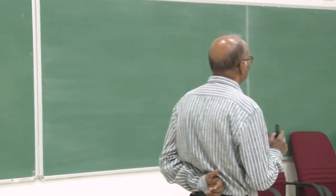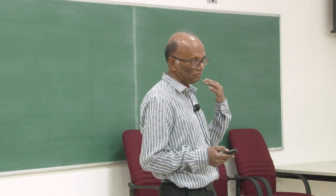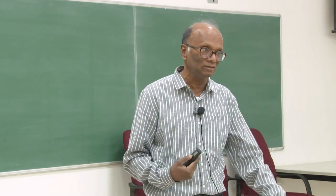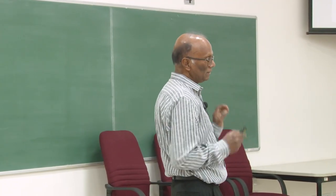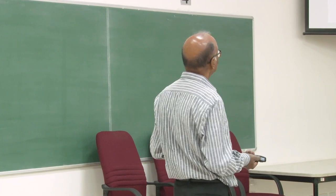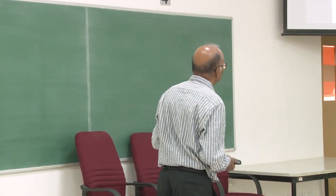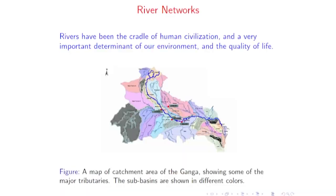I would like to discuss today about river networks. Rivers have been the cradle of human civilization — all the great civilizations started near rivers: the Nile, the Indus, the Euphrates in the Iraq region. Rivers are important for our environment and quality of life, and nowadays we have to worry a lot about rivers. This is a map of the catchment basin of the Ganga River, with some major tributaries and different sub-basins shown in different colors.